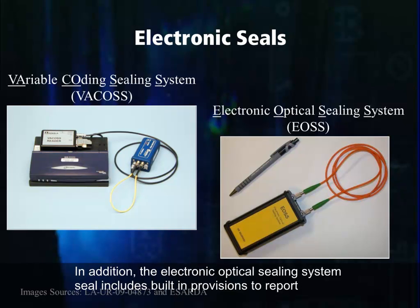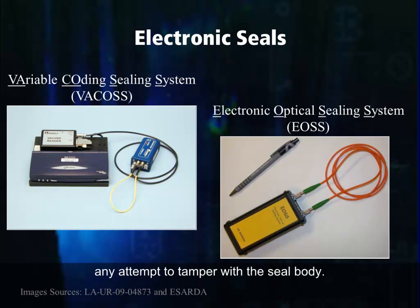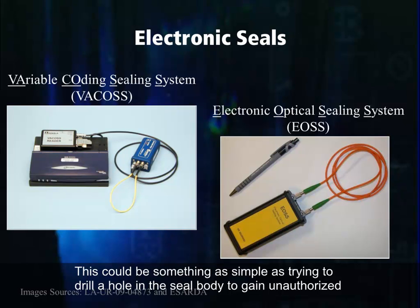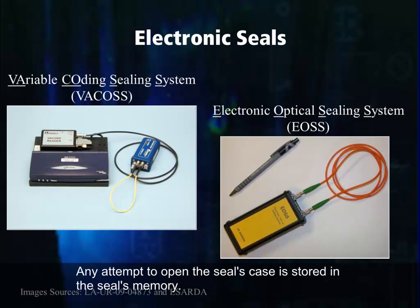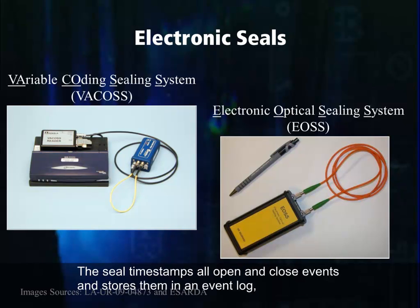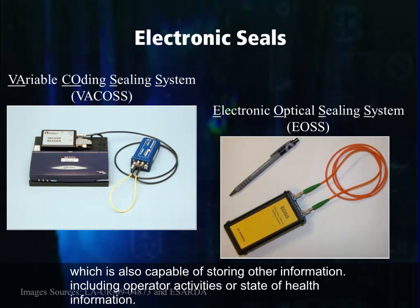In addition, the electronic optical sealing system includes built-in provisions to report any attempt to tamper with the seal body. This could be something as simple as trying to drill a hole in the seal body to gain unauthorized access to the sealed data or to switch off essential functions. Any attempt to open the seal's case is stored in the seal's memory. The seal timestamps all open and close events and stores them in an event log, which is also capable of storing other information including operator activities or state of health information.